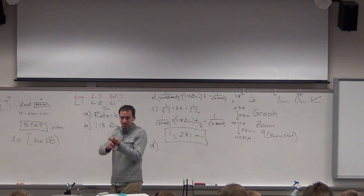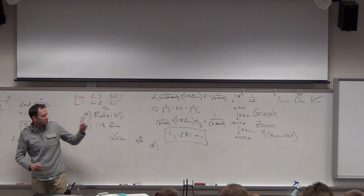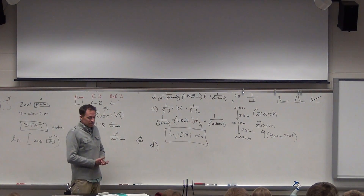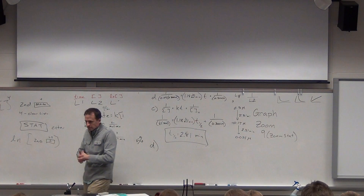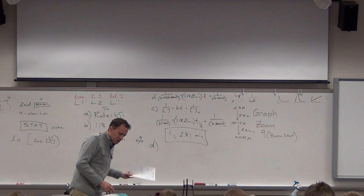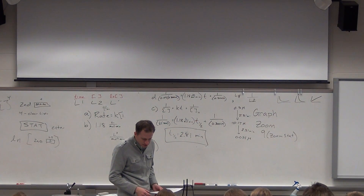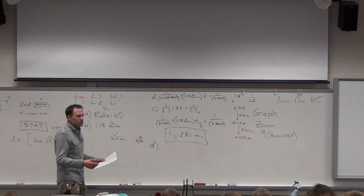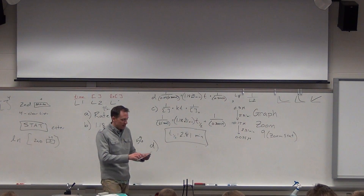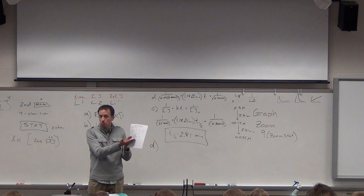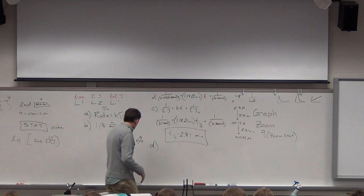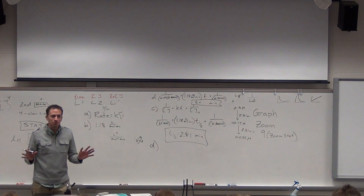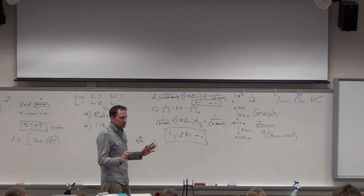I need 5% of my original concentration — that's what I have left, not 95% because that's gone. So [A] = 0.05 × 0.3 = 0.015. I plug that in and solve for t. On our sheet it's 0.037, so the answer should be more than 20 minutes. Make sure your units are correct — it's in minutes, which you get from your rate constant. What did we get? 53.7 minutes.